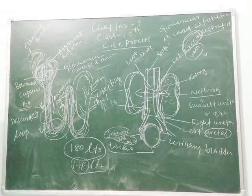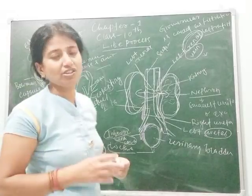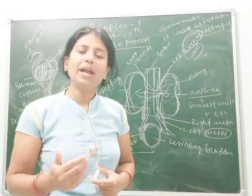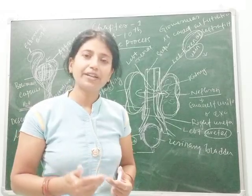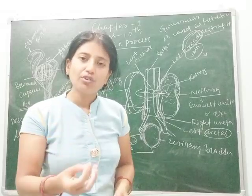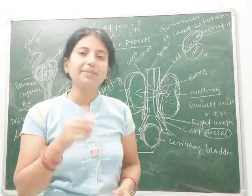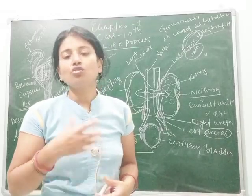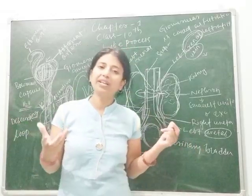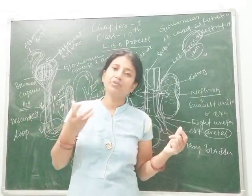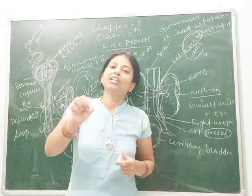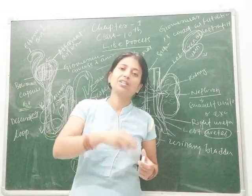This completes the excretory system. Like animals, plants also excrete. Plants take nutrition, perform transportation, and also remove excretory products. Some plants shed their leaves when excretory products accumulate in them. Some plants shed their bark, which is the hard outer layer, also as an excretory product.